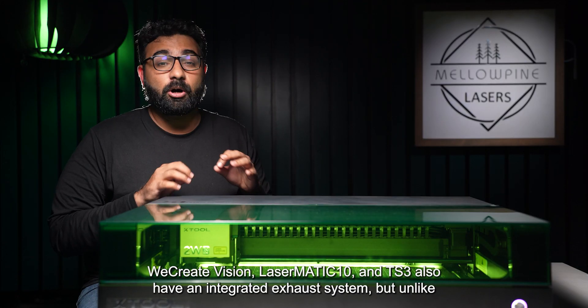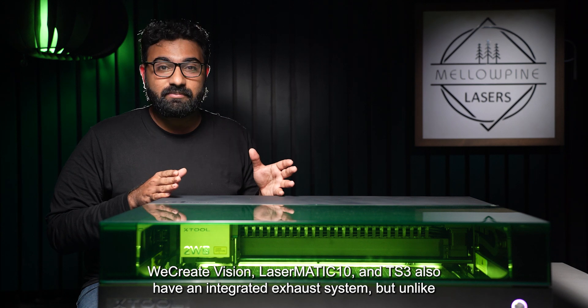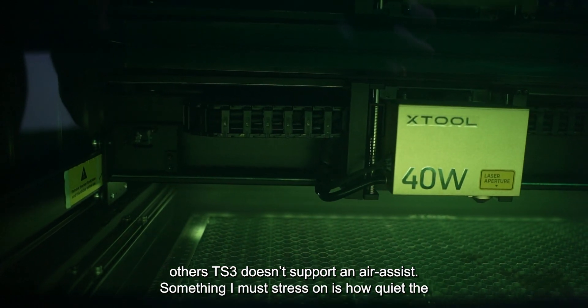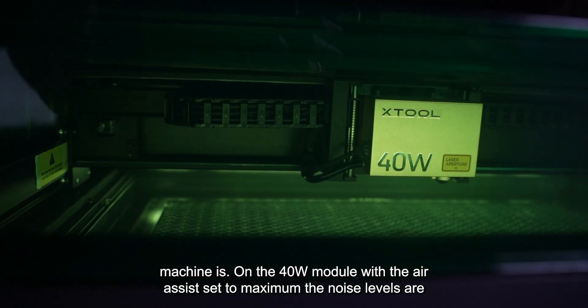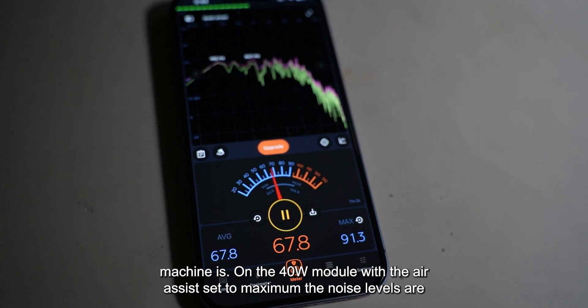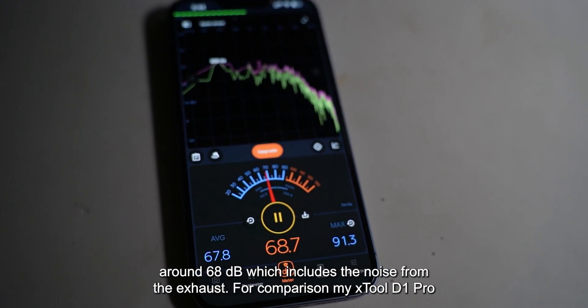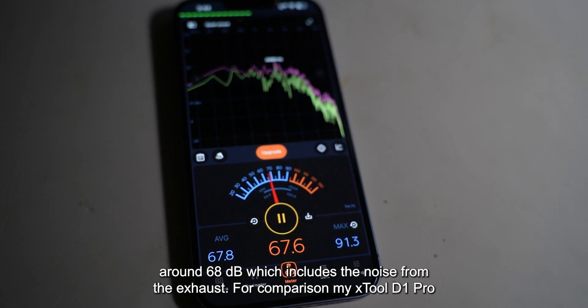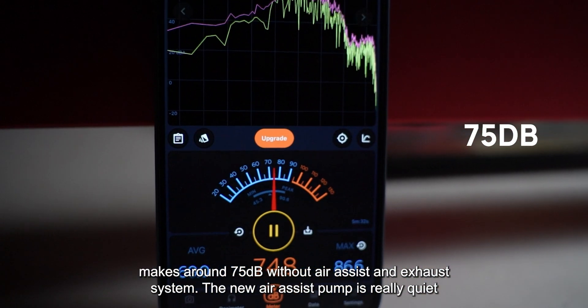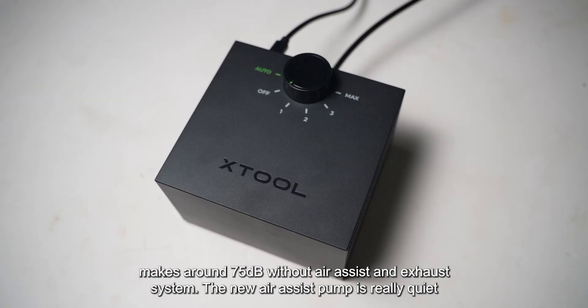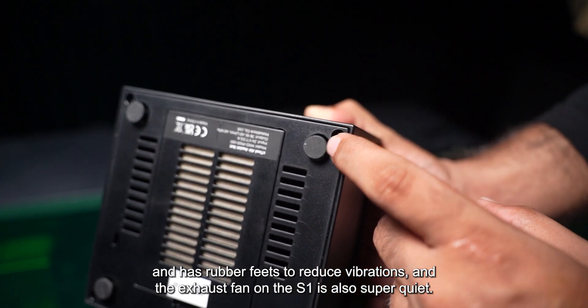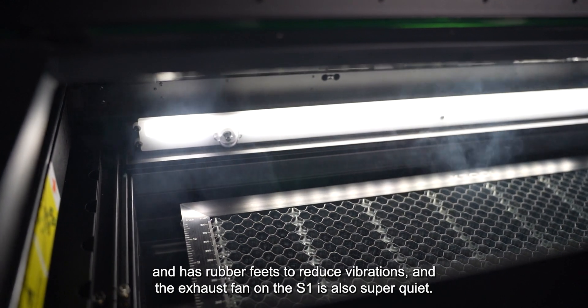WeCreateVision, Lasermatic 10 and TS3 also have an integrated exhaust system, but unlike the others, the TS3 doesn't support an air assist. Something I must stress on is how quiet the machine is. On the 40W module with the air assist set to maximum, the noise levels are around 68 decibels, which includes the noise from the exhaust. For comparison, my Xtool D1 Pro makes around 75 decibels without air assist and exhaust system. The new air assist pump is really quiet and has rubber feeds to reduce vibrations. And the exhaust fan on the S1 is also super quiet.